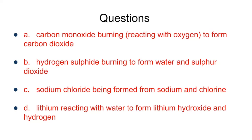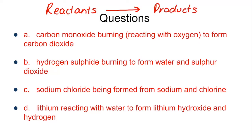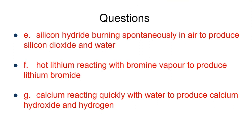Now there are some questions for you to try — can you convert these sentences into word equations? You might want to write these down on a piece of paper and identify your reactants and products. Remember, it's always reactants, then an arrow, then products. The questions are: carbon monoxide reacting with oxygen to form carbon dioxide; hydrogen sulfide burning to form water and sulfur dioxide; sodium chloride being formed from sodium and chlorine — watch out, that's a tricky one; and lithium reacting with water to form lithium hydroxide and hydrogen.